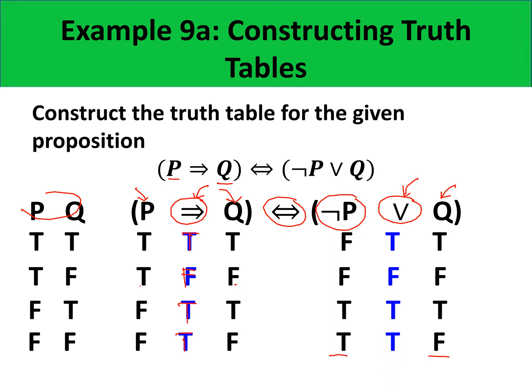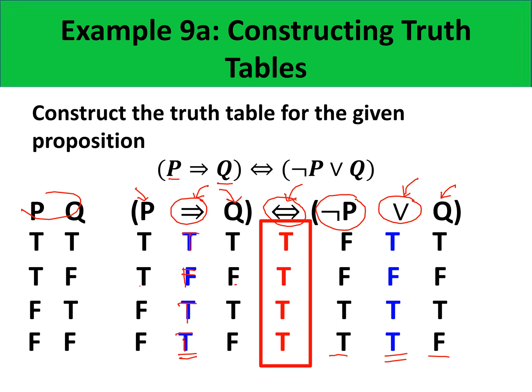Now observe that we have two columns with truth values colored blue. These blue-colored truth values shall be used to evaluate the biconditional. Recall that the biconditional is true if the values of the propositions are the same, and false if they are not the same. Comparing row by row, we have the same values in the blue-colored columns, so the biconditional will be all true. This is the final column of the truth table and shall serve as the final answer.